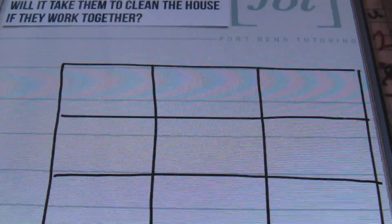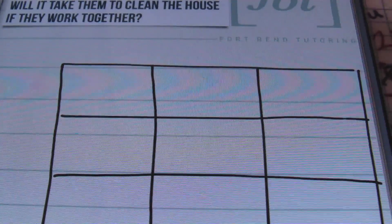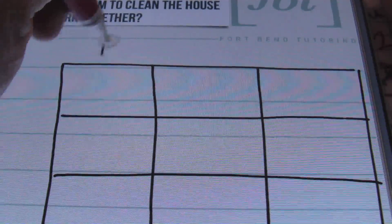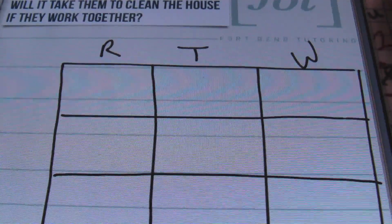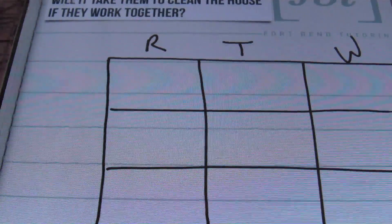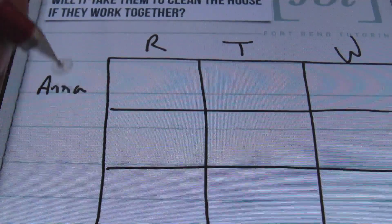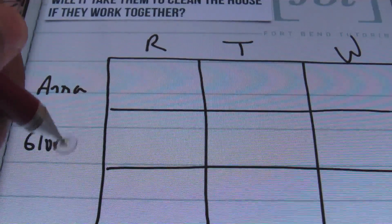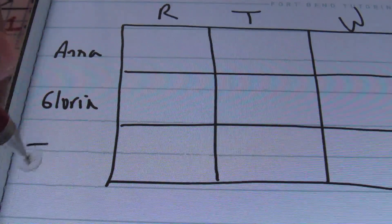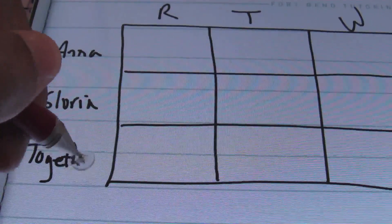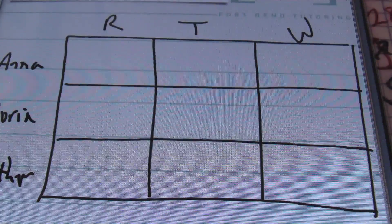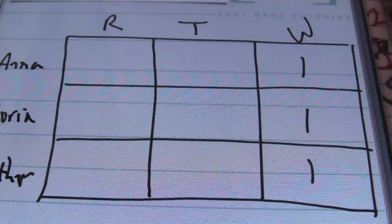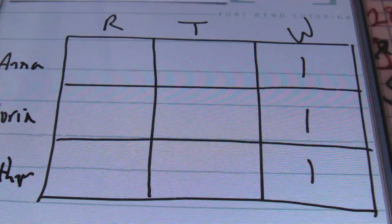I'll be starting with my table first. In my table, I'll label the columns as R for rate, T for time, and it's going to equal the job being done — the work. I have two people working here: Anna and Gloria, and of course them working together. We know that what they're doing is cleaning one house. Therefore, the job being done is just one.